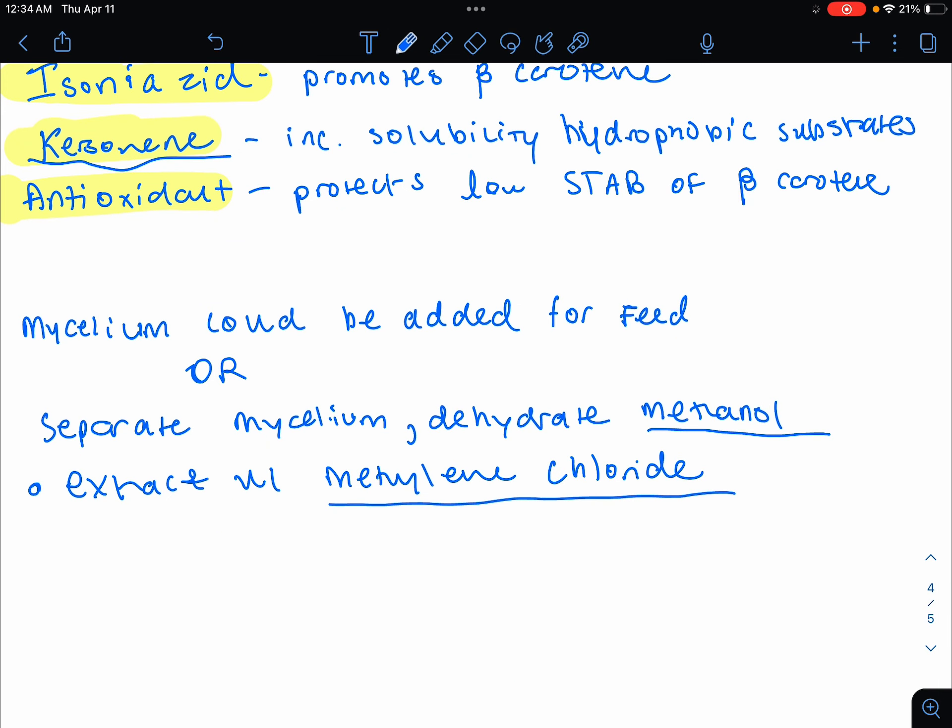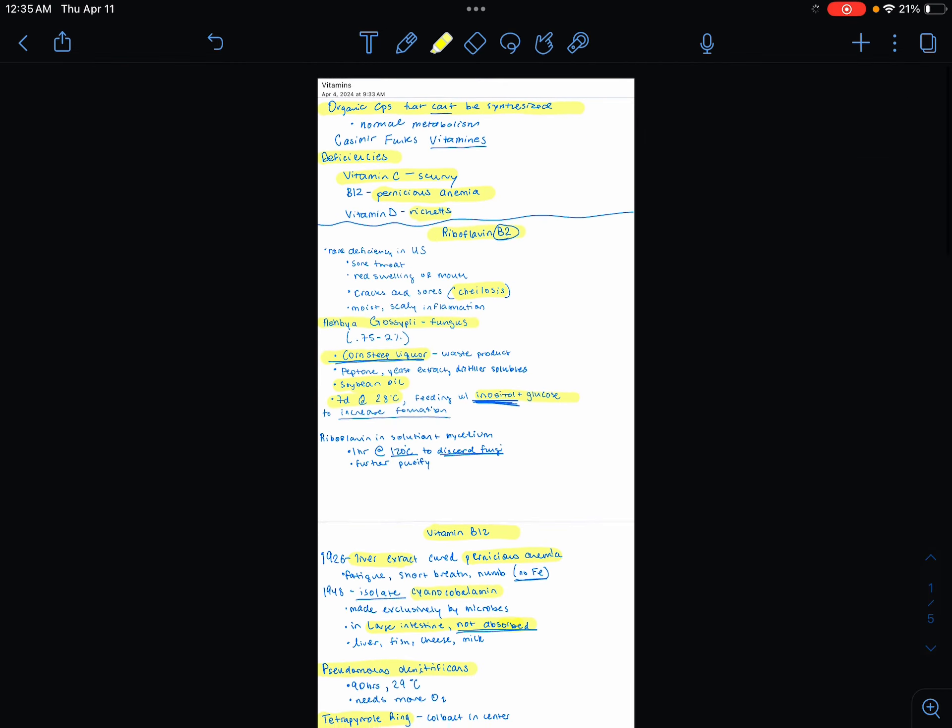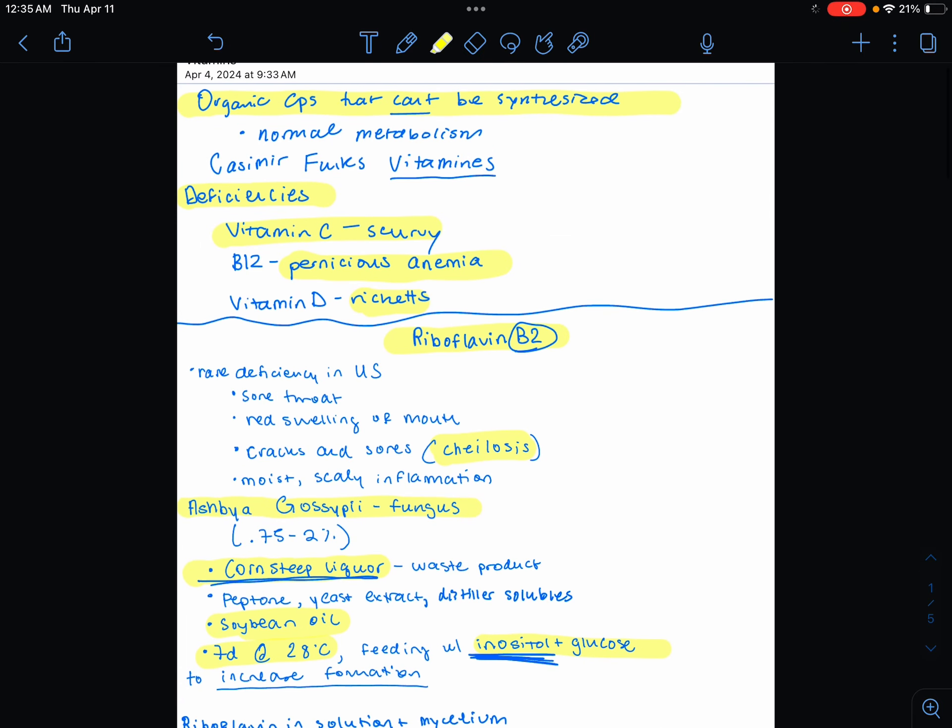Recovery. Mycelium can be used directly as a feed additive. Or you could separate out the mycelium. And you're going to dehydrate it with methanol and extract the beta-carotene using methylene chloride. And then, of course, there's going to be extra purification steps. That's all on vitamins. Please have a good one and do something nice for someone.